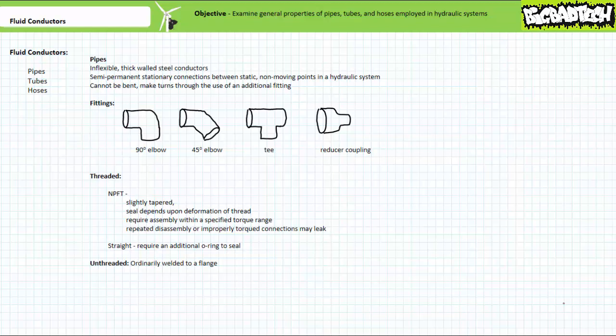Pipes with straight threads, in contrast, are not tapered and rely upon an additional O-ring to seal the connection.